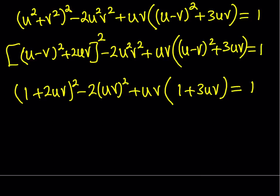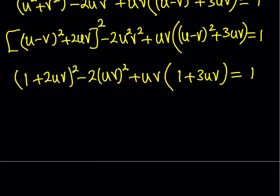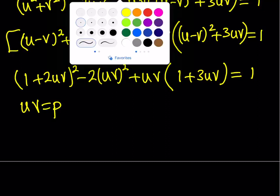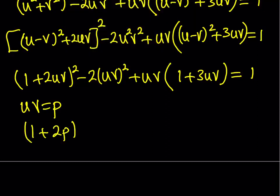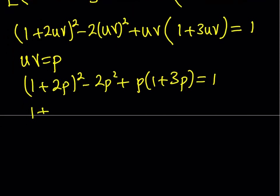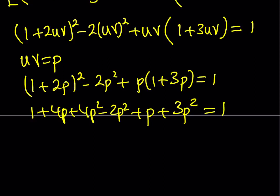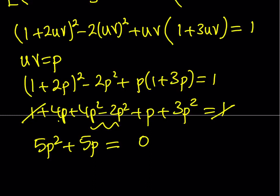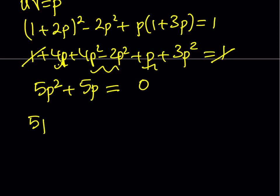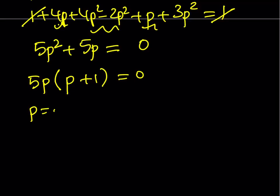We now have an equation only in uv, so it makes sense to replace uv with p. This gives us 1 plus 2p, squared, minus 2p squared, plus p times 1 plus 3p, equal to 1. Expanding: 1 plus 4p plus 4p squared minus 2p squared plus p plus 3p squared equals 1. Collecting like terms gives 5p squared plus 5p equals 0. Factoring out 5p: p times p plus 1 equals 0, giving us p equals 0 or p equals negative 1.